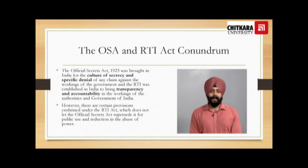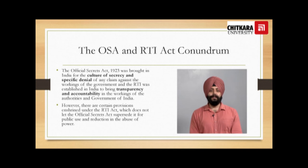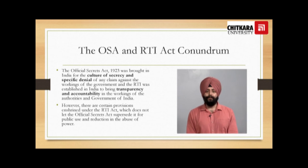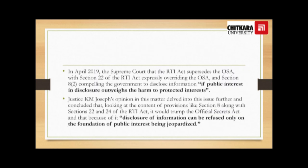The Official Secrets Act 1923 was brought in India for a culture of secrecy and specific denial of any claim against the workings of the government. The RTI, on the other hand, was established in India to bring transparency and accountability in the workings of the authorities and government of India. However, there are certain provisions enshrined under the Right to Information Act which do not let the Official Secrets Act supersede it for public use and reduction in the abuse of power. In April 2019, the Supreme Court said that the RTI Act supersedes the OSA, with Section 22 of the RTI expressly overriding the OSA, and Section 8 compelling the government to disclose information if public interest in disclosure outweighs the harm to protected interest.